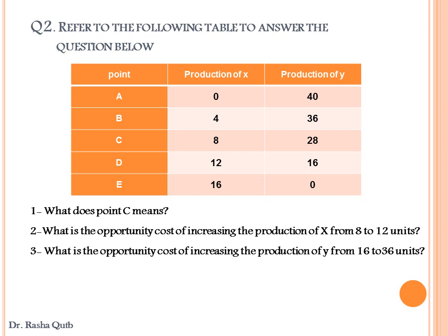Now let's move to the second question. Refer to the following table to answer the questions below. We are given a table with the production of X and production of Y, with points A, B, C, D representing combinations of two products. These are points on the production possibility curve. First required: what does point C mean? Point C is a point on the production possibility curve where 8 units of X and 28 units of Y are produced when all resources are fully employed.